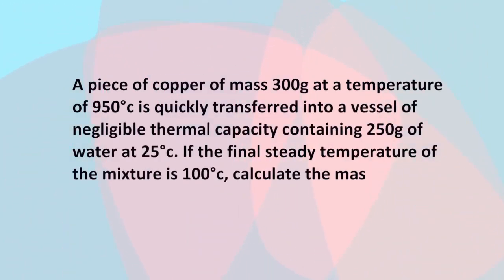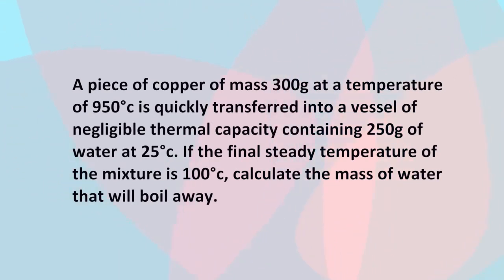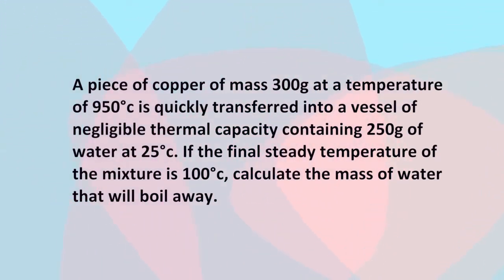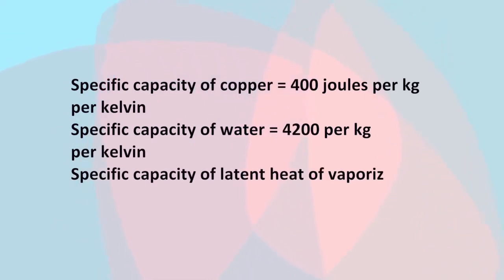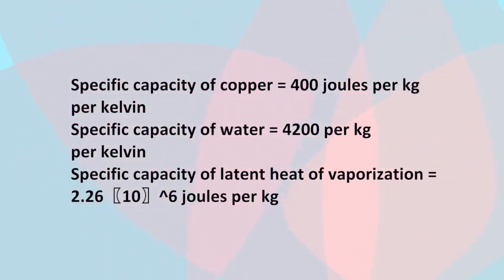Question 2: A piece of copper of mass 300 grams at a temperature of 950 degrees Celsius is quickly transferred into a vessel of negligible thermal capacity containing 250 grams of water at 25 degrees Celsius. If the final steady temperature of the mixture is 100 degrees Celsius, calculate the mass of water that will boil away. Given: specific heat capacity of copper = 400 J/kg/K, specific heat capacity of water = 4,200 J/kg/K, and latent heat of vaporization of water = 2.26 × 10⁶ J/kg.